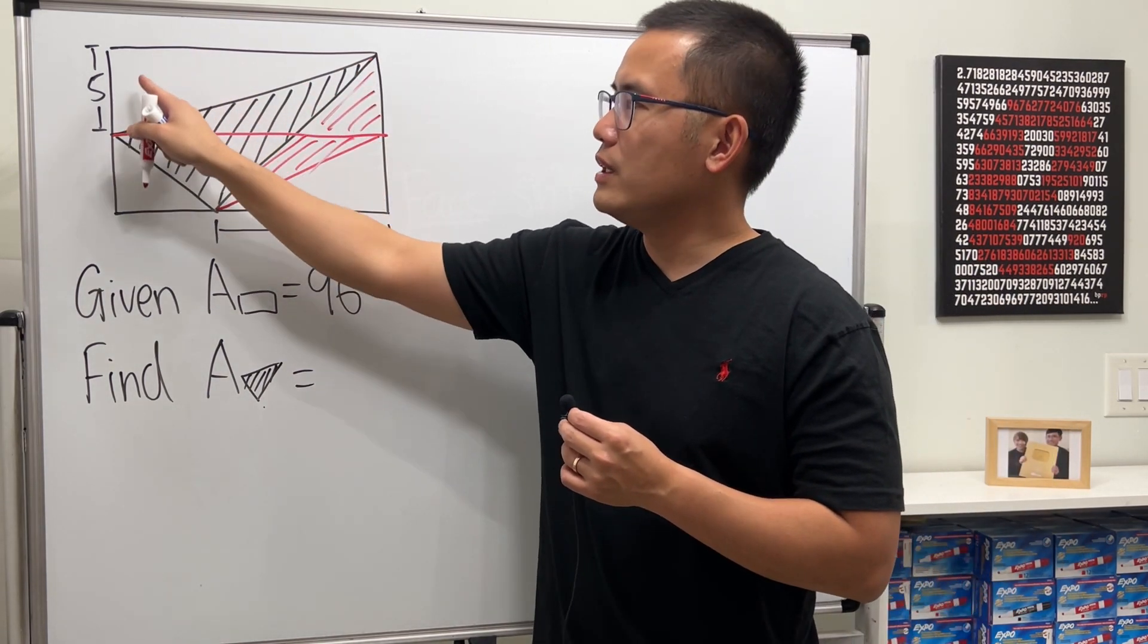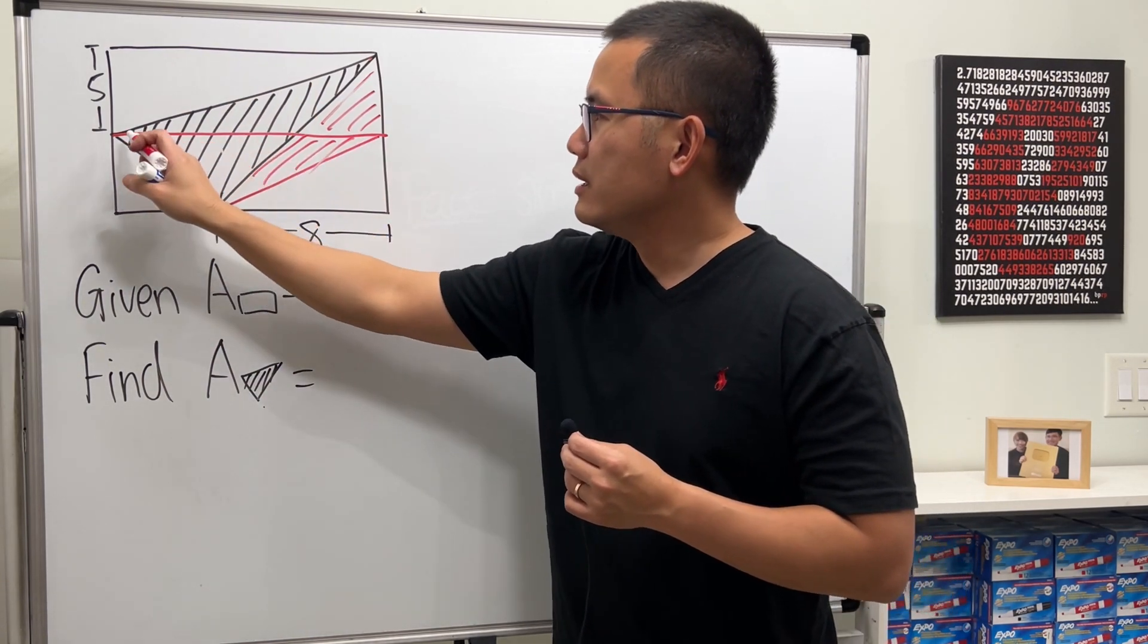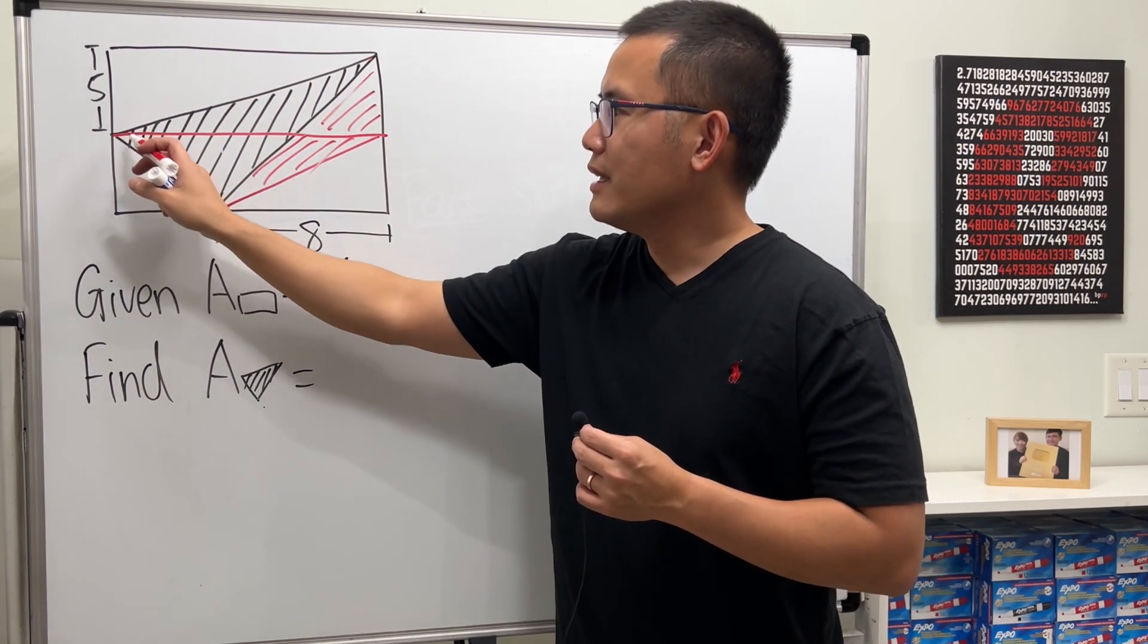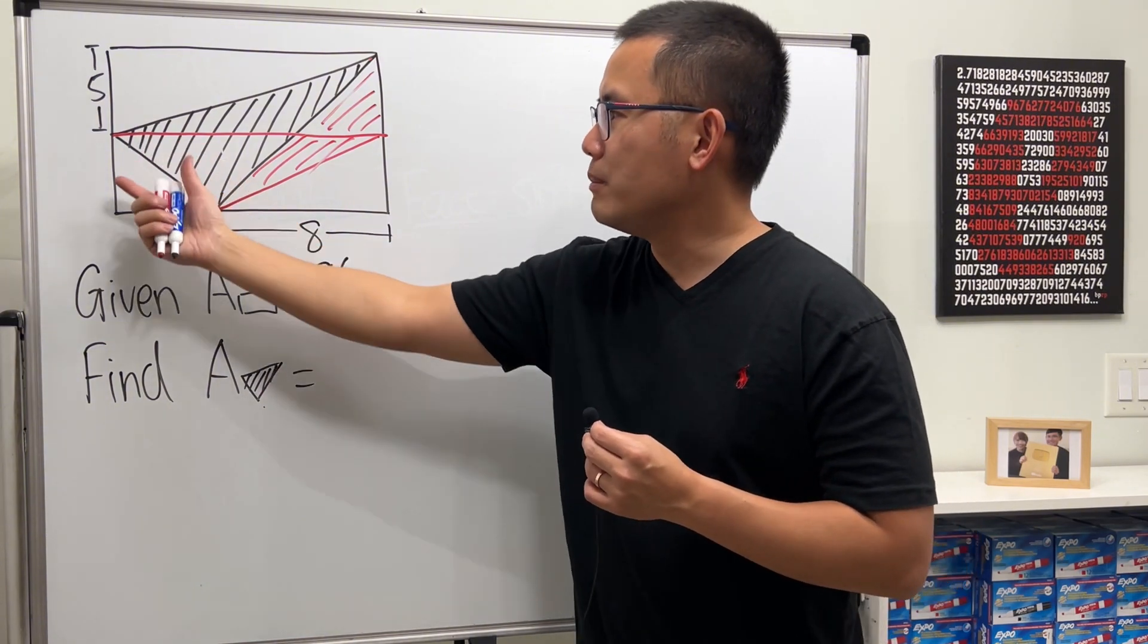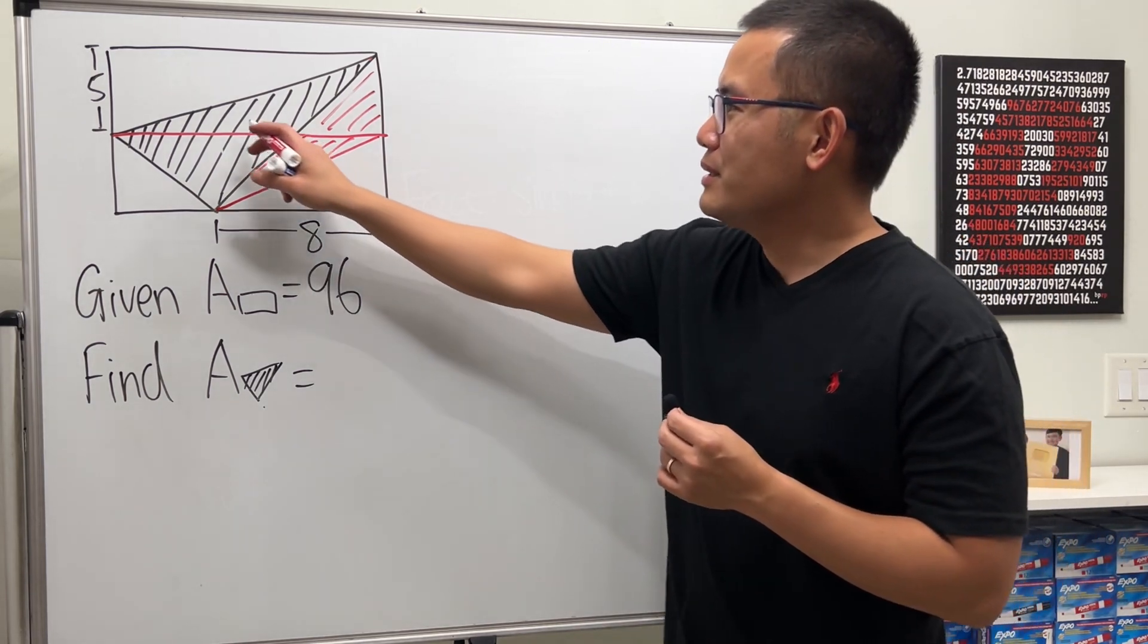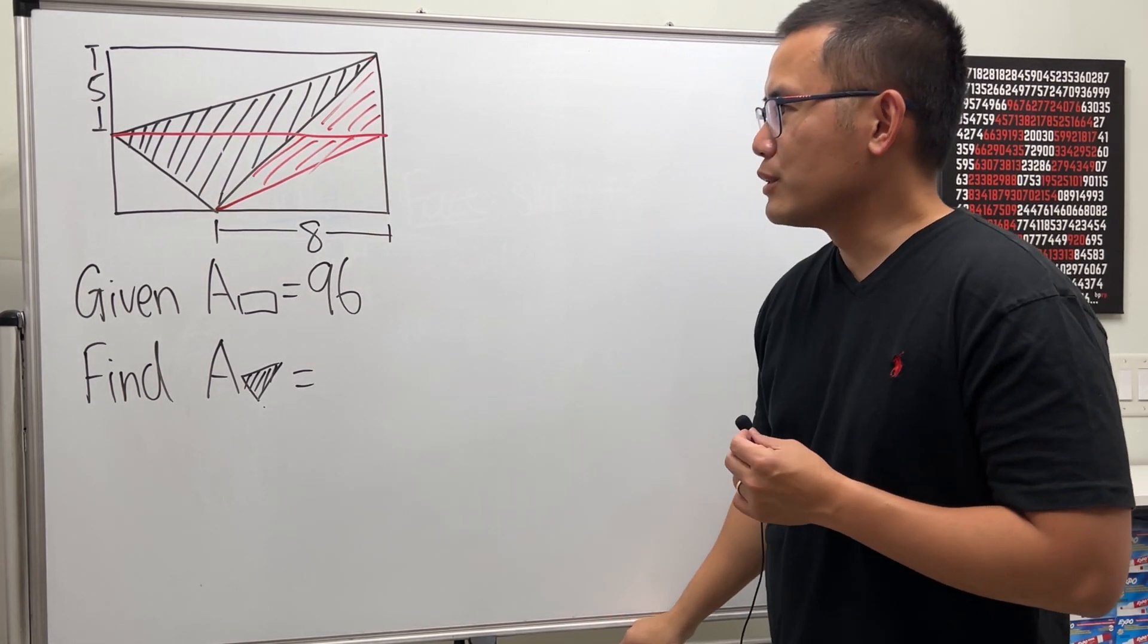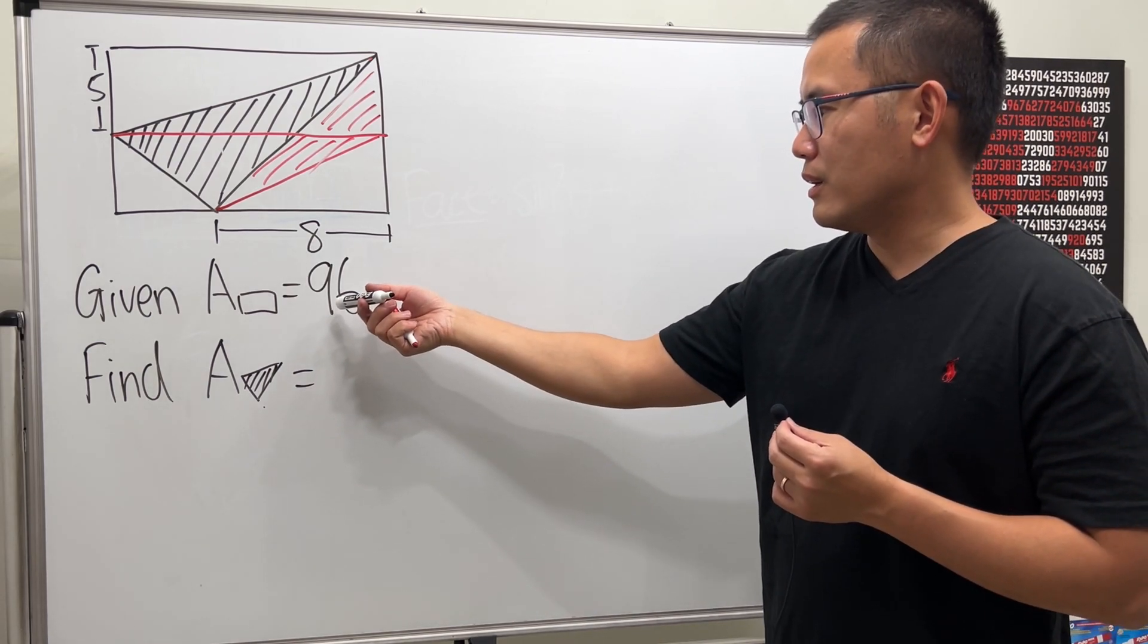So as you can see this top portion is half of the top half rectangle, and then the bottom portion, this triangle here, it's also half of the bottom rectangle. Yes, yes! So as you can see the region in black and the region in red, they are just half of the 96.